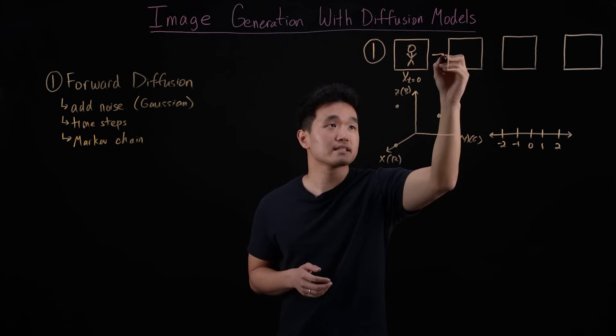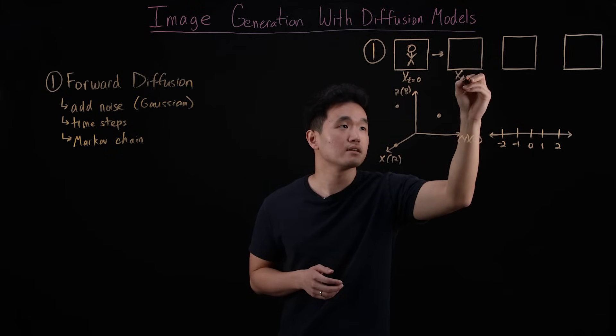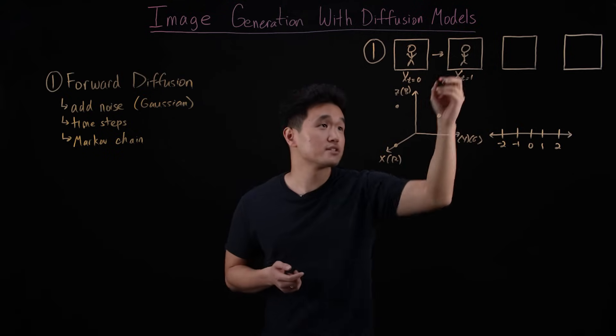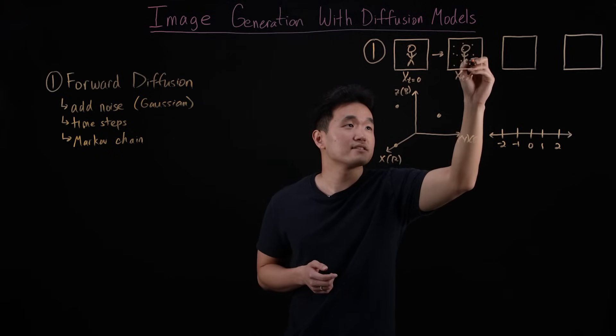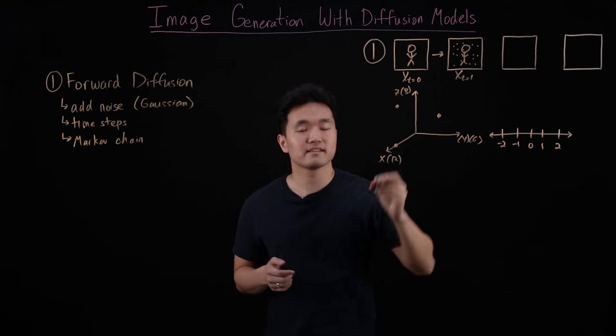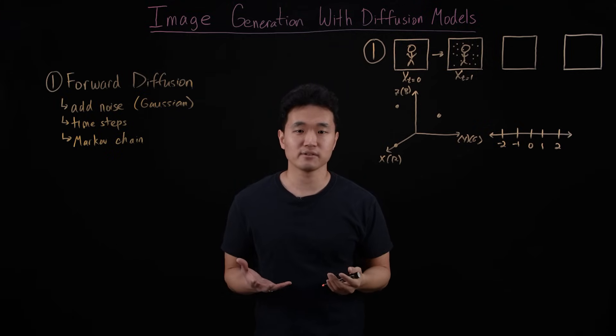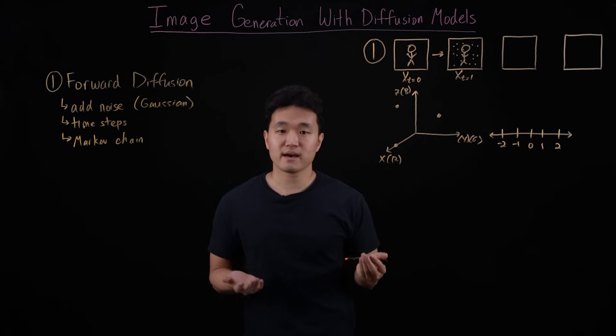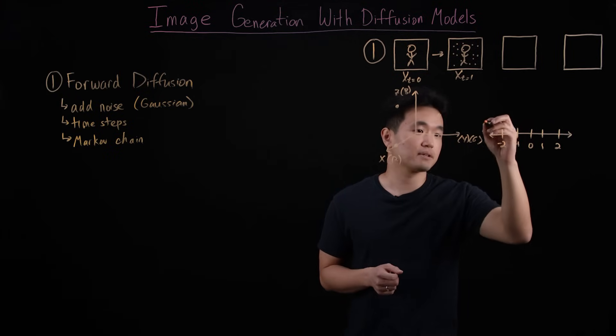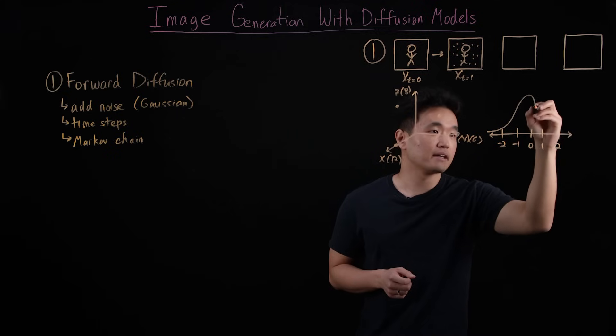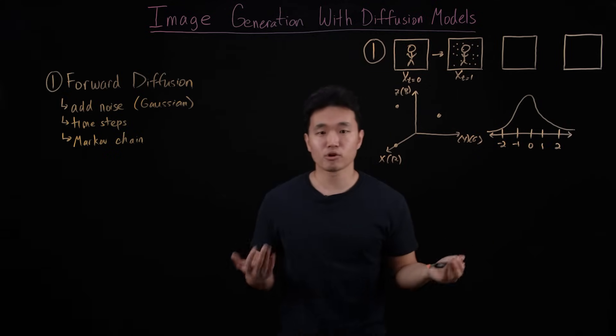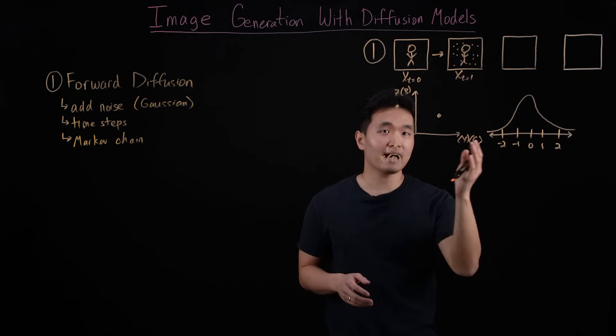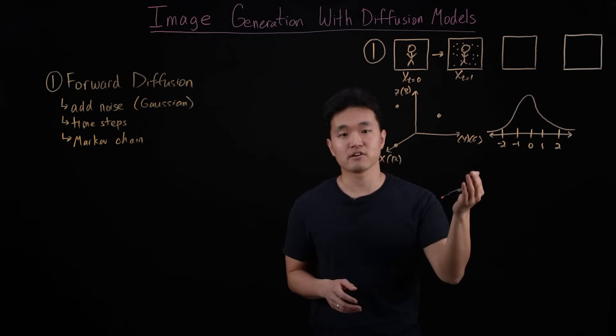So as we move to the next time step, t equals to one, we now add random Gaussian noise to our image. Think of Gaussian noise as looking a bit like those specks of TV static you get on your TV when you flip to a channel that has a weak connection. Now mathematically, adding Gaussian noise involves randomly sampling from a Gaussian distribution, a.k.a. a normal distribution or bell curve, in order to obtain numbers that will be added to each of the values of our RGB pixels.